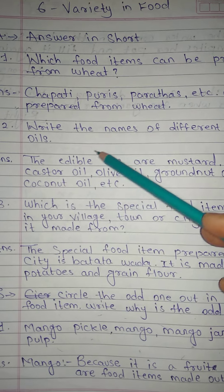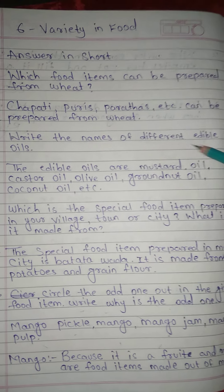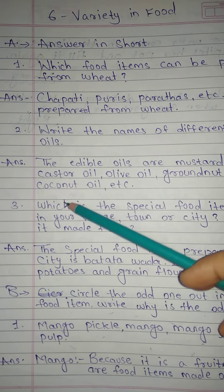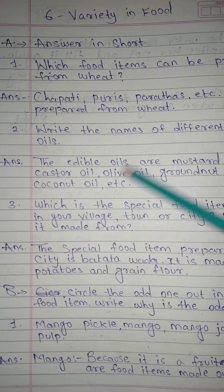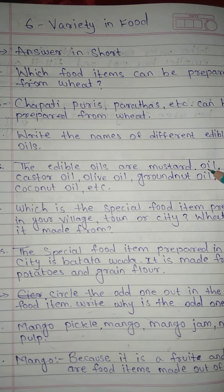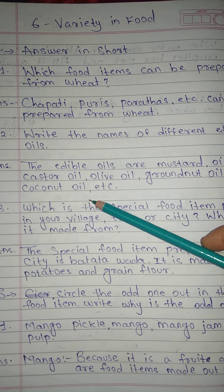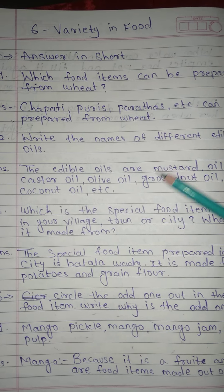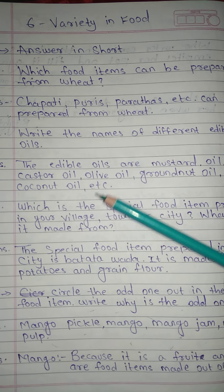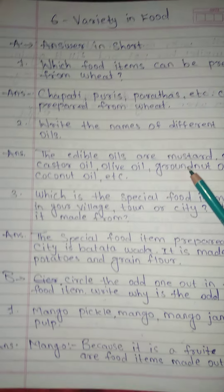No. 2: Write the name of different edible oils. Answer: The edible oils are mustard oil, castor oil, olive oil, groundnut oil, coconut oil, etc.